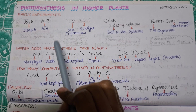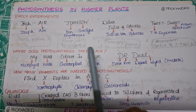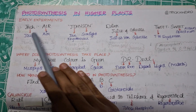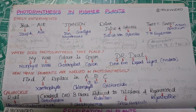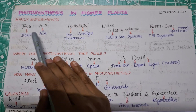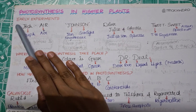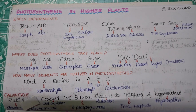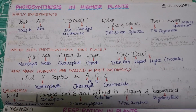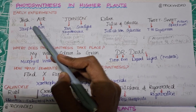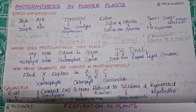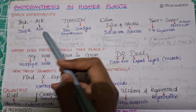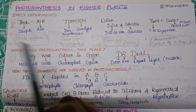The first short trick will be for the early experiments in your chapter. There are four early experiments and questions may come from these. The first short trick will be 'Josh Air' — your josh should always be high to pursue the AIR 1 (All India Rank 1). So 'Josh Air' stands for Joseph, and 'Air' is for the essentiality of air for photosynthesis.